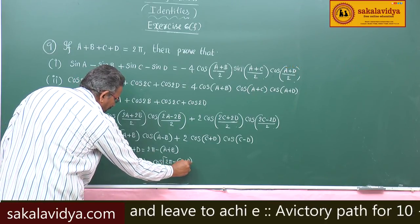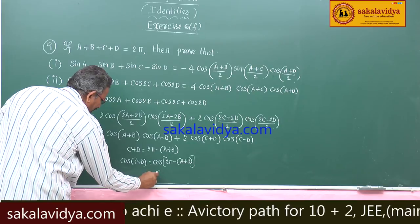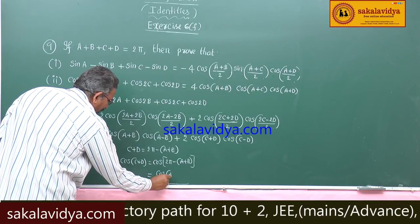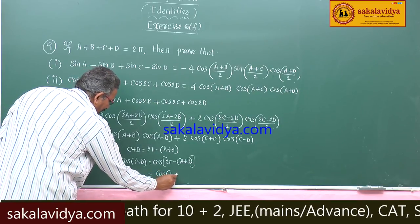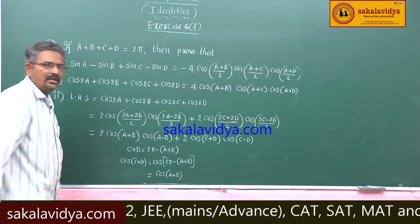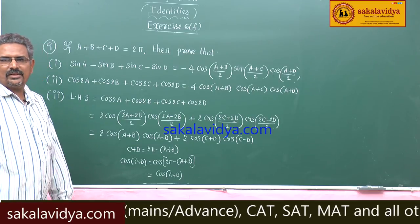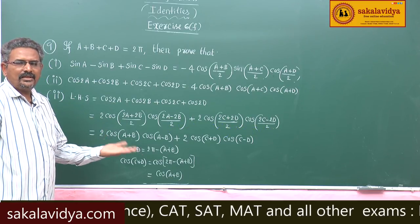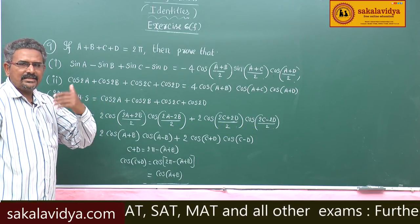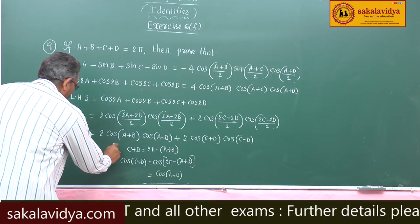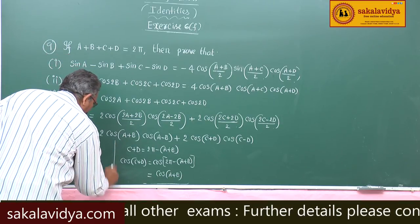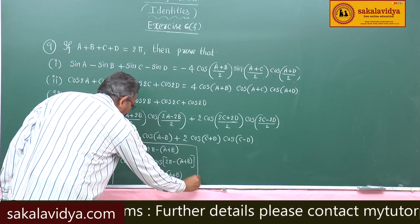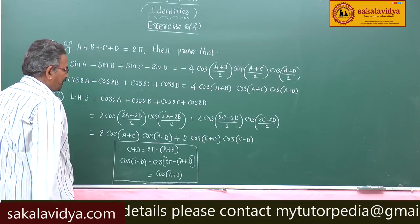Applying cosine: cos(C+D) = cos(360° − (A+B)). Since cos(360° − θ) = cosθ, because 360° − θ lies in the fourth quadrant where cosine is positive, we get cos(C+D) = cos(A+B).